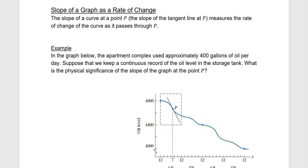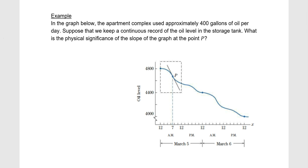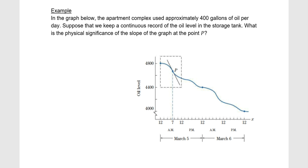Now for slope of a graph as a rate of change. The slope of a curve at a point — which is the same as the slope of the tangent line at the point — measures the rate of change of the curve as it passes through that point. In this example, an apartment complex used approximately 400 gallons of oil per day. We keep a continuous record of the oil level in a storage tank. What is the physical significance of the slope of the graph at point P? The horizontal axis is time, from 12 a.m. to 12 p.m., covering March 5th to March 6th.